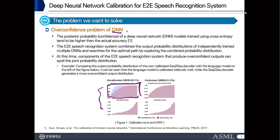For example, we can see in this case where we combine the decoder output and the language model output. The decoder output tends to be overconfident and the language model is well calibrated. If we combine these probabilities, there can be some problems. So we want to calibrate the decoder output and make a better combined probability distribution.